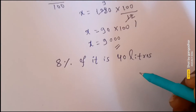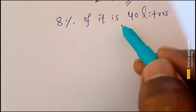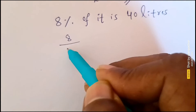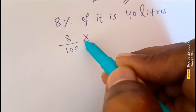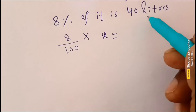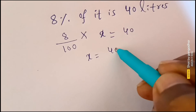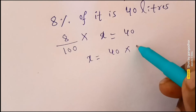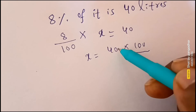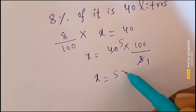Second problem: 8% of it is 40 liters. You have to write 8 divided by 100, 'of' means multiply, 'it is' means x is equal to 40 liters. You have to write x as it is: 40 into 100 divided by 8. It becomes reciprocal when transferred to the right hand side — 8 ones are 8, 5 eights are 40.